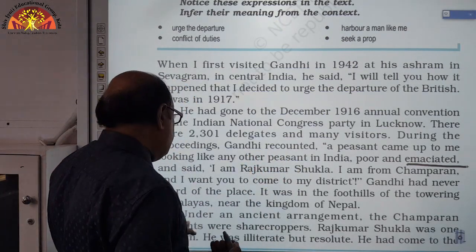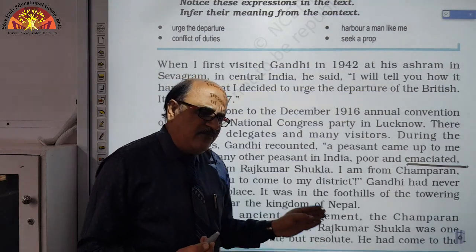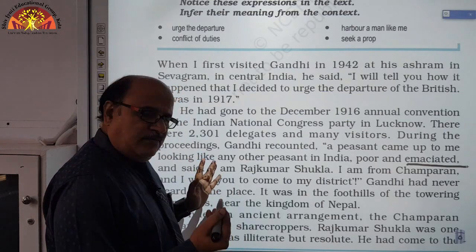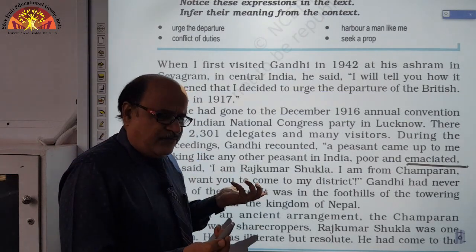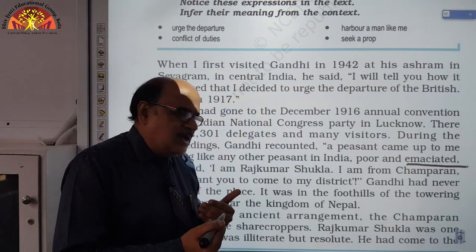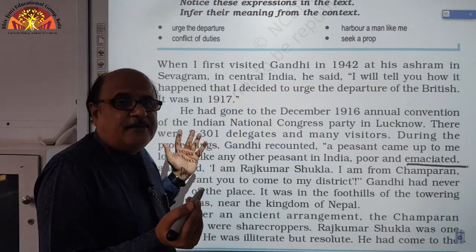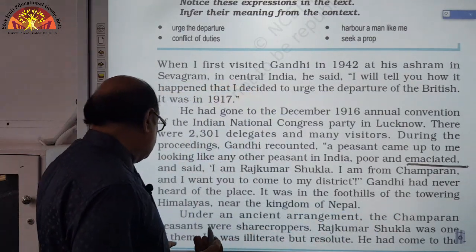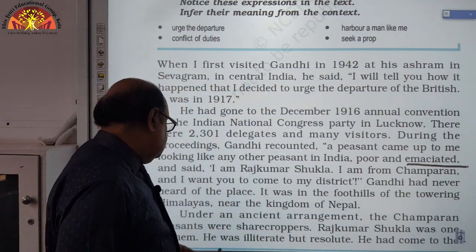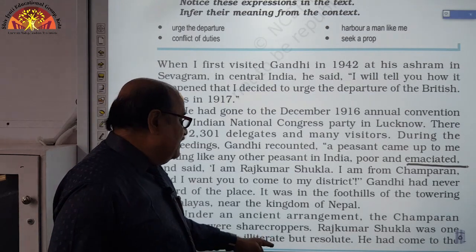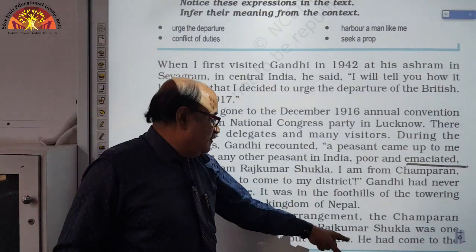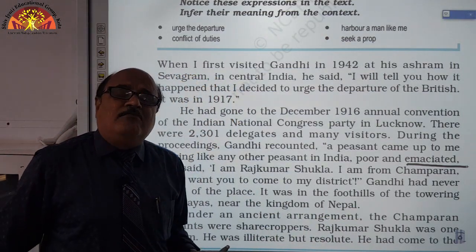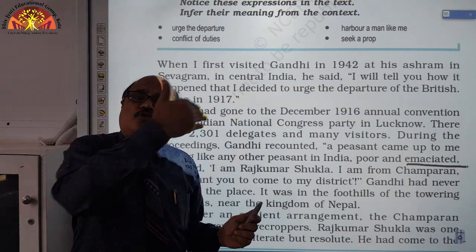When Gandhi asked why he wanted him to go there, Shukla said: 'We seek help from you. I want you to be with us and share our problem regarding indigo sharecropping.' Rajkumar Shukla was one of the victims. He was illiterate but resolute, and he had come all the way to Mahatma Gandhi wanting him to go back with him.